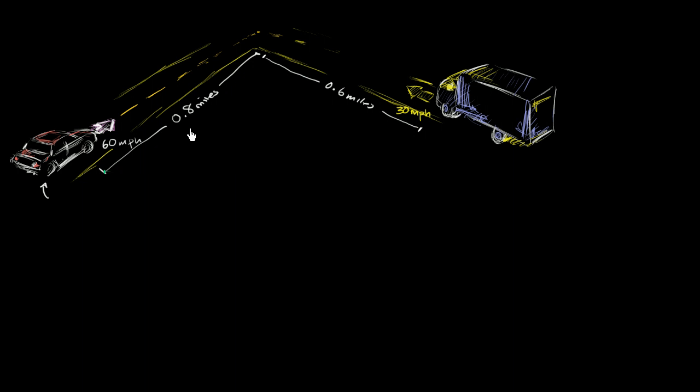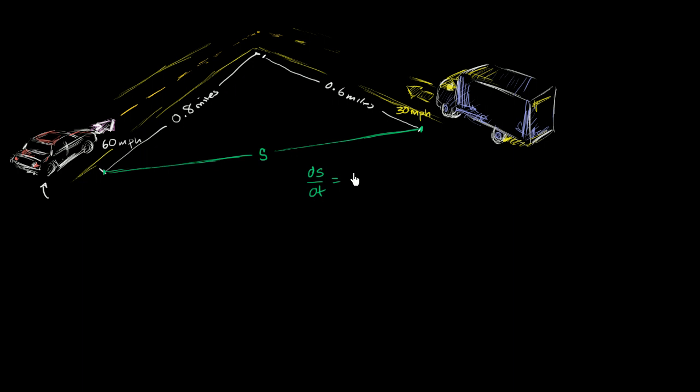The question is: what is the rate at which the distance between the car and the truck is changing? To think about that, let's consider what we're asking. When the car is 0.8 miles from the intersection and the truck is 0.6 miles from the intersection, what is the rate at which this distance right over here is changing? Let's call this distance s. What we're really trying to figure out is: right at this moment, what is ds/dt going to be equal to?